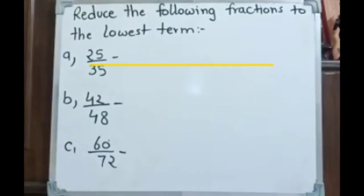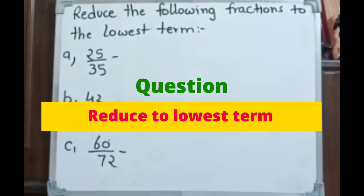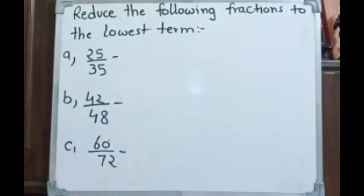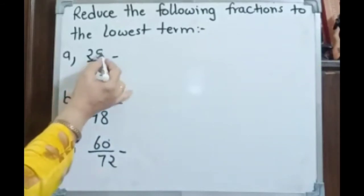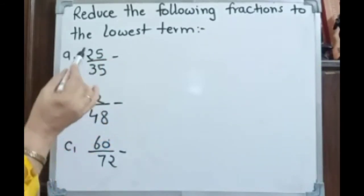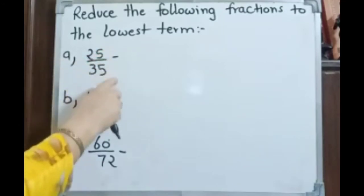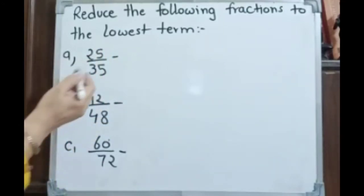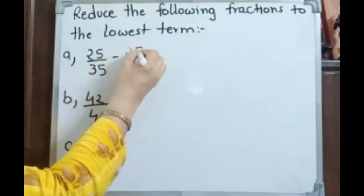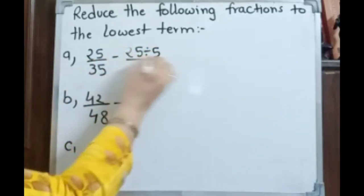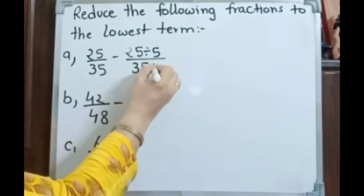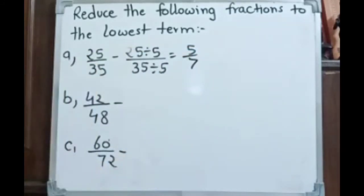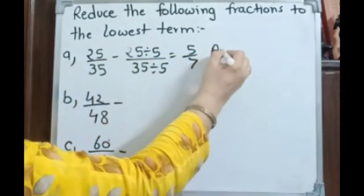Reduce the following fractions to lowest terms: 25 by 35, 42 by 48, 60 by 72. For 25 by 35: both numbers have 5 in the ones place, so both are divisible by 5. Dividing gives 5 by 7 — the answer is 5 by 7.